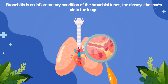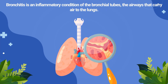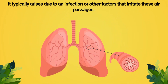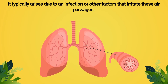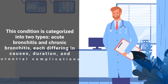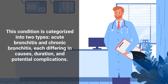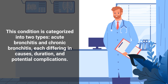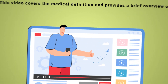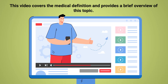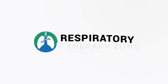Bronchitis is an inflammatory condition of the bronchial tubes, the airways that carry air to the lungs. It typically arises due to an infection or other factors that irritate these air passages. This condition is characterized into two types: acute bronchitis and chronic bronchitis, each differing in causes, duration, and potential complications. This video covers the medical definition and provides a brief overview of this topic.